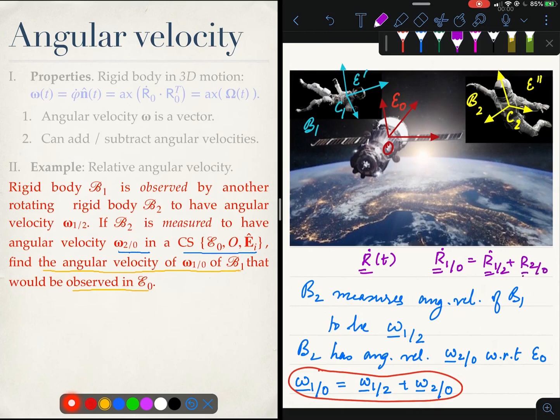If I had tried to write something like R of 1 with respect to 0 dot is equal to R of 1 with respect to 2 dot plus R of 2 with respect to 0 dot, this is absolute garbage because rotation tensors cannot be added and be expected to give you rotation tensors. But angular velocity is a vector and can be added just in the same way as you used to add relative velocities to get the total velocities.